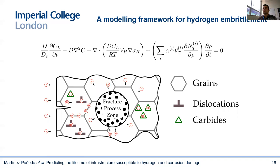What I was showing was the simplest formulation for hydrogen diffusion. In reality, hydrogen not only diffuses freely through the lattice but is also trapped on microstructural sites such as grain boundaries, dislocations, and carbides. So we have developed more comprehensive models that can capture the role of multiple hydrogen trap types, and those introduce some additional couplings.